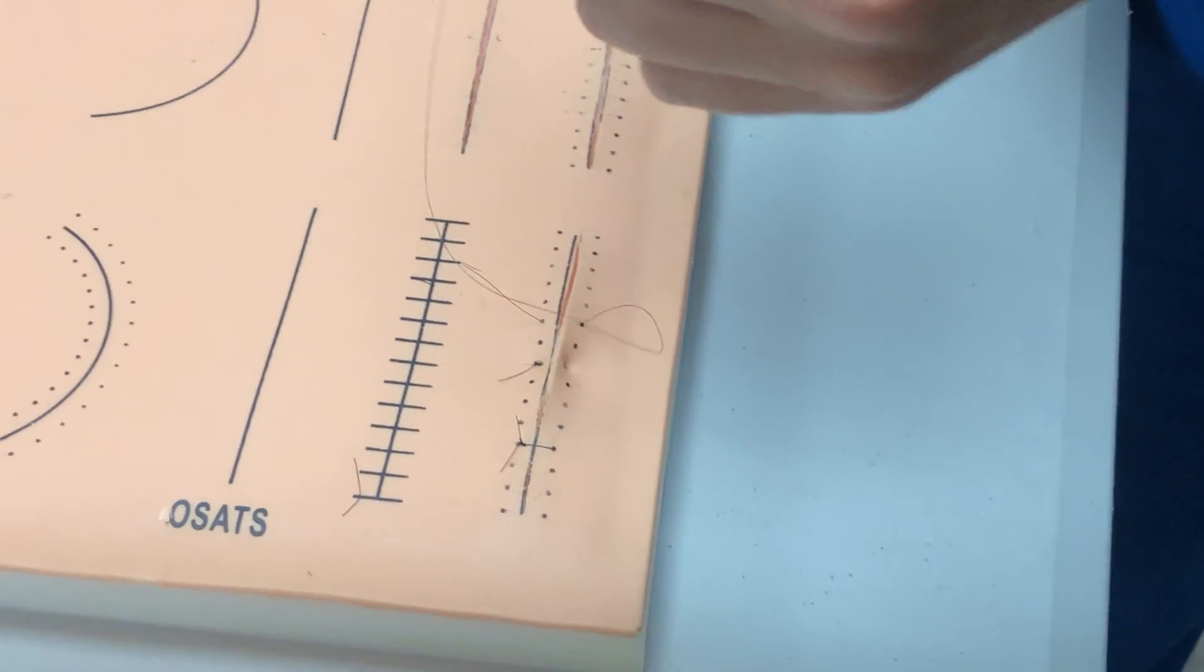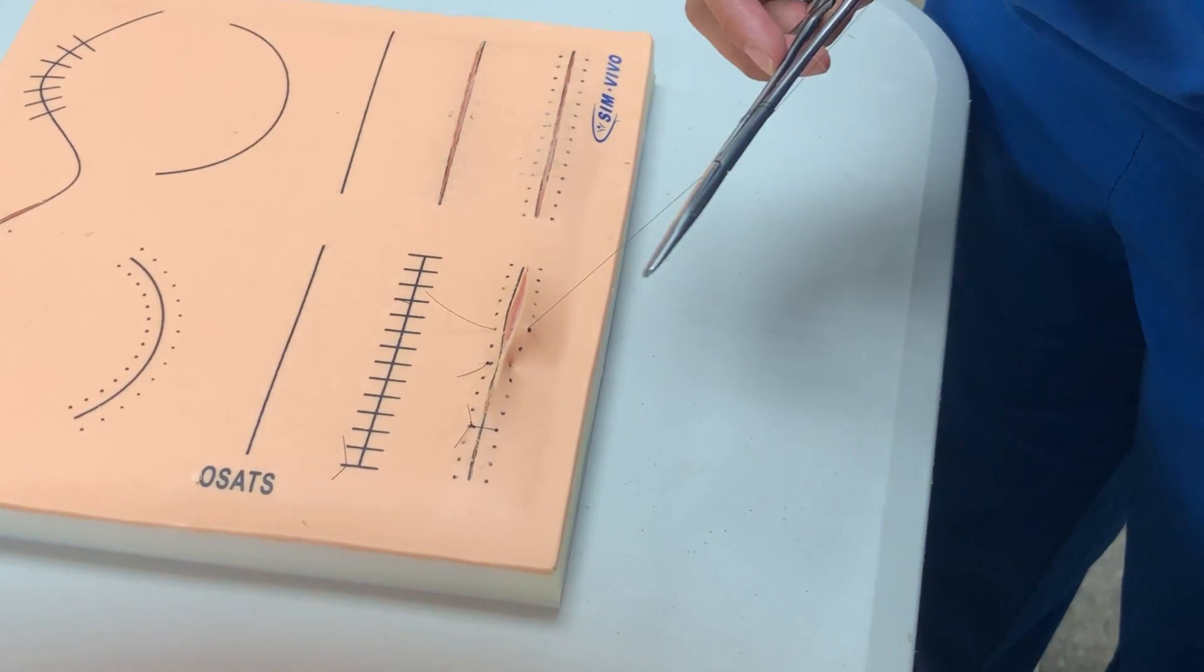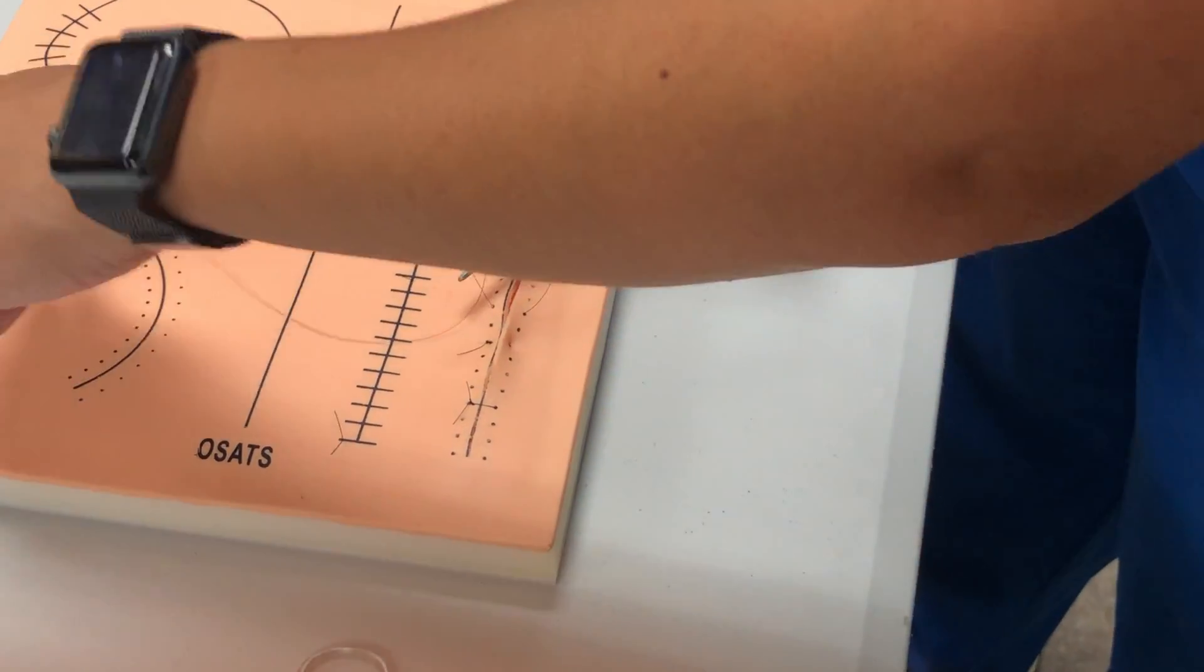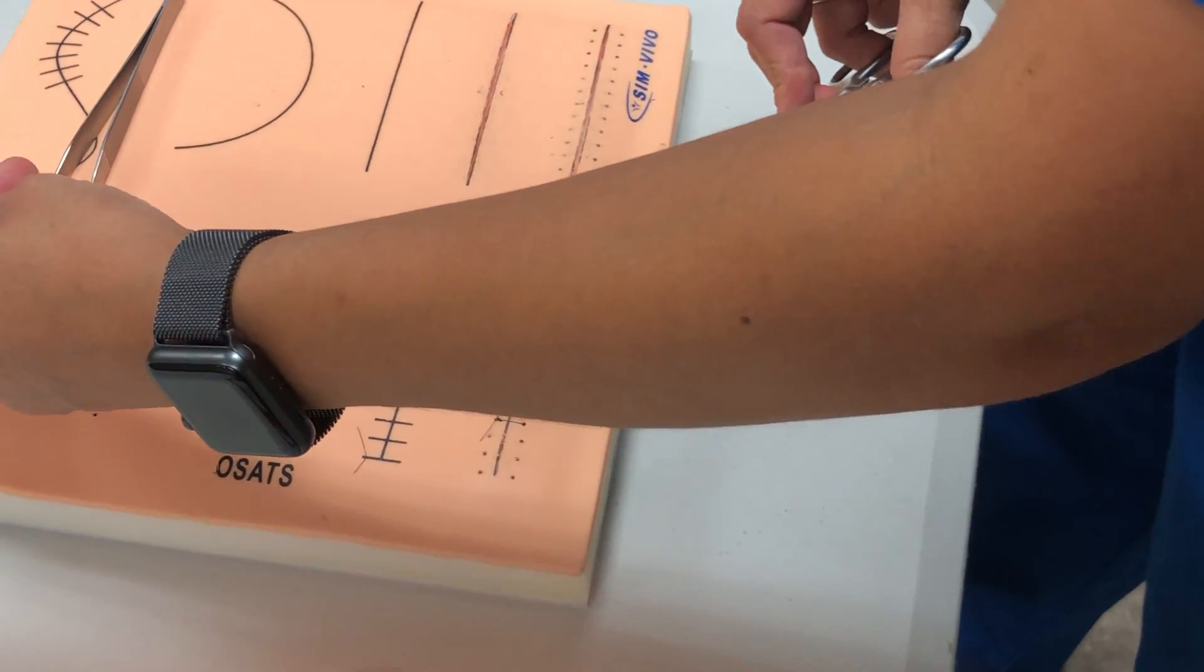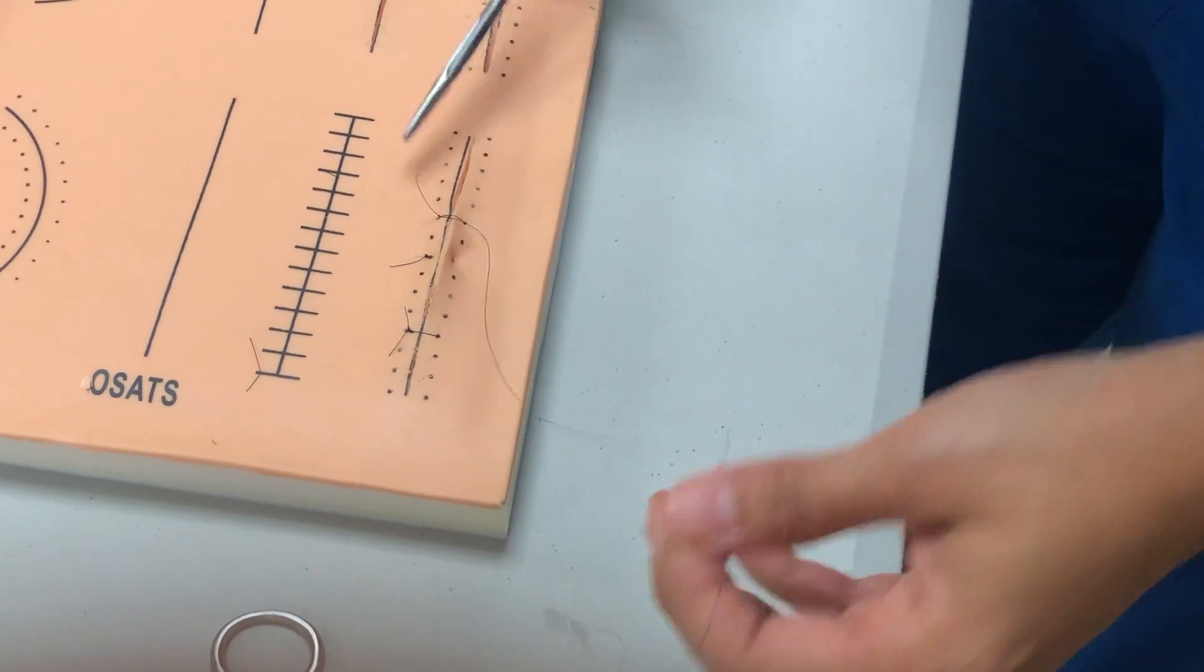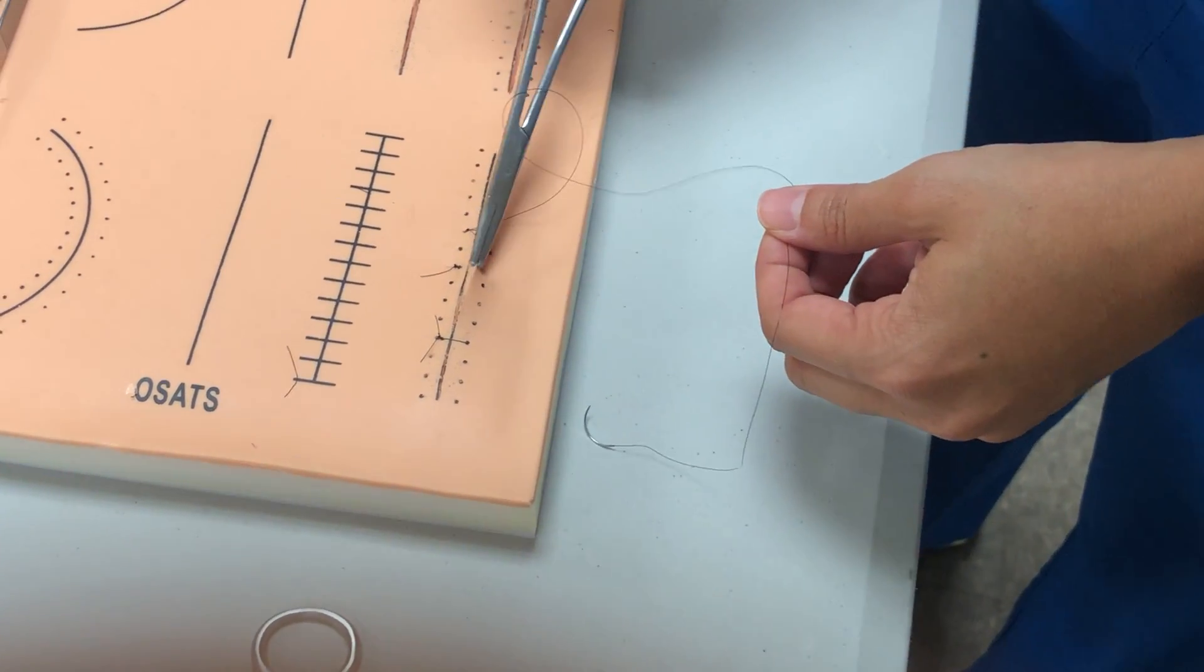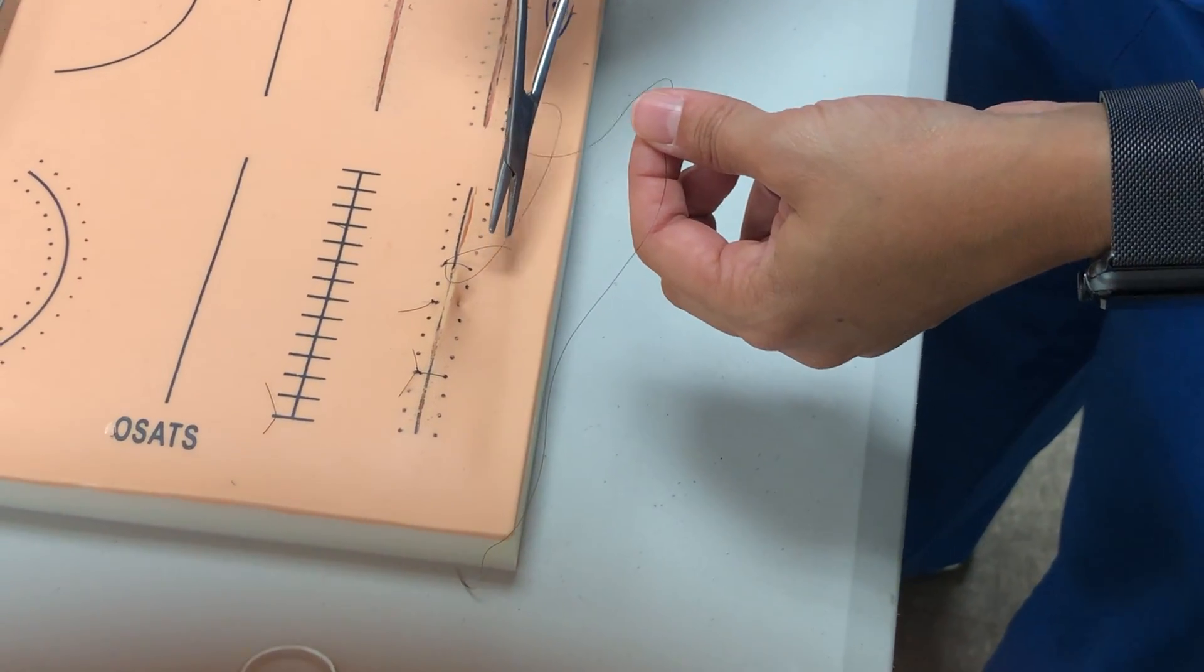Now I'm going to tie it off. I usually leave my forceps in my hand to just save time, but you can set them down while you're knot tying. Okay, I'll set our surgeon's knot and then laying it flat. So then we'll finish out our knot tying, but we're not going to cut it at the end because we want to keep it going.